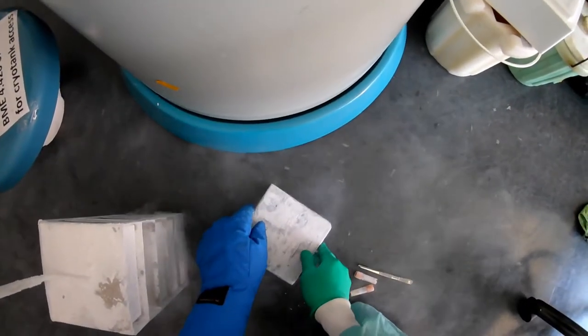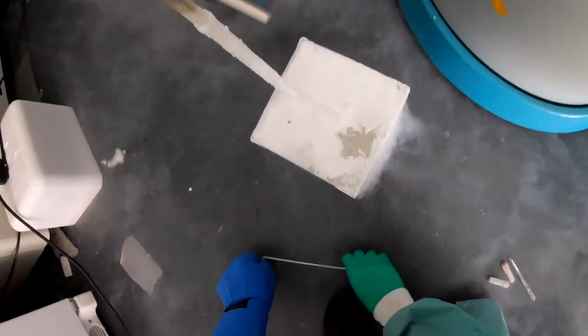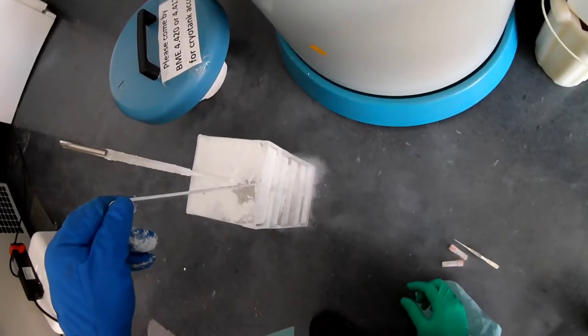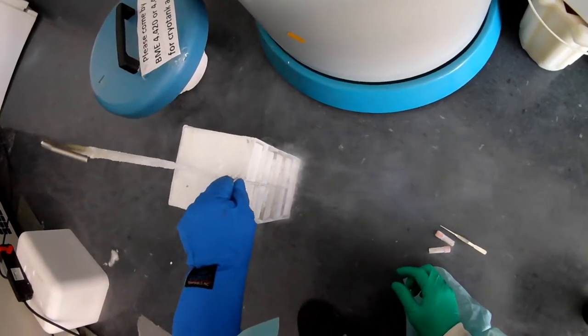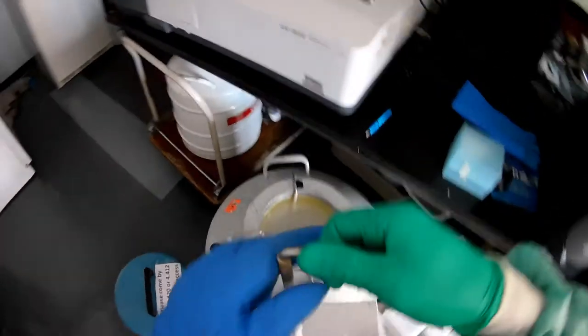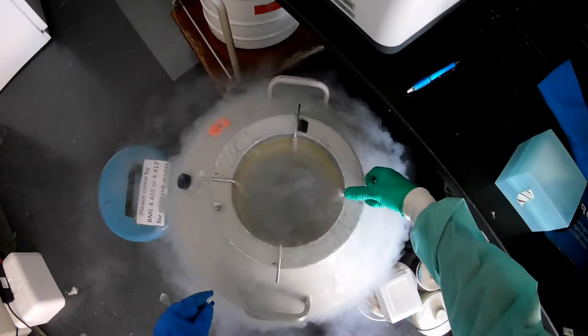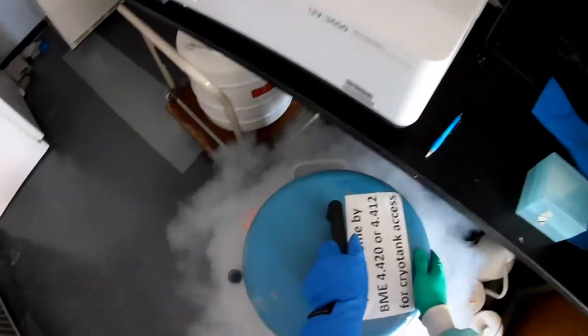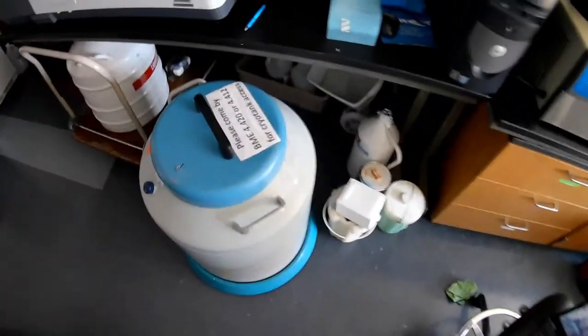So I quickly put this back, put the little lock back in here so that these boxes don't fall out. And get this back in the tank nice and quickly. All right. So that's all there is to getting your cells out for cell culture.